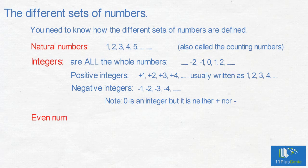Even numbers are 0, 2, 4, 6, 8, etc. Odd numbers are 1, 3, 5, 7, etc.